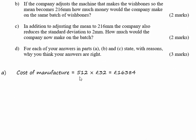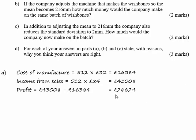£32 to manufacture, 512 of them means the cost of manufacture is £16,384. We sell them at £84, so a batch of 512 perfect wishbones will give an income of £43,008. Subtract that one from the other means we get a net profit of £26,624.